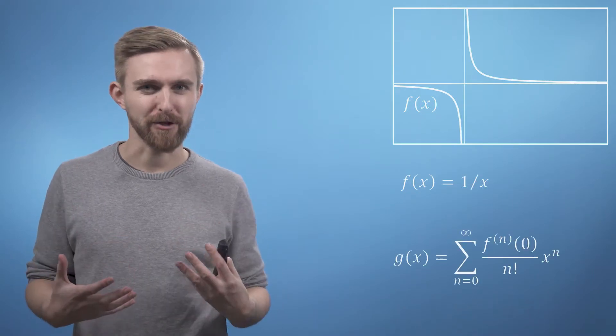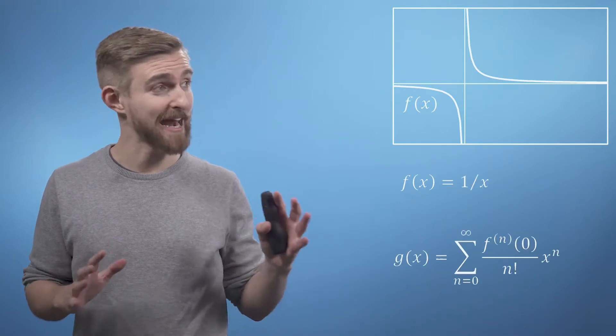In the second example we're going to take a look at the function f of x equals 1 over x which of course looks like this. It's a nice simple function but notice the discontinuity at x equals 0.